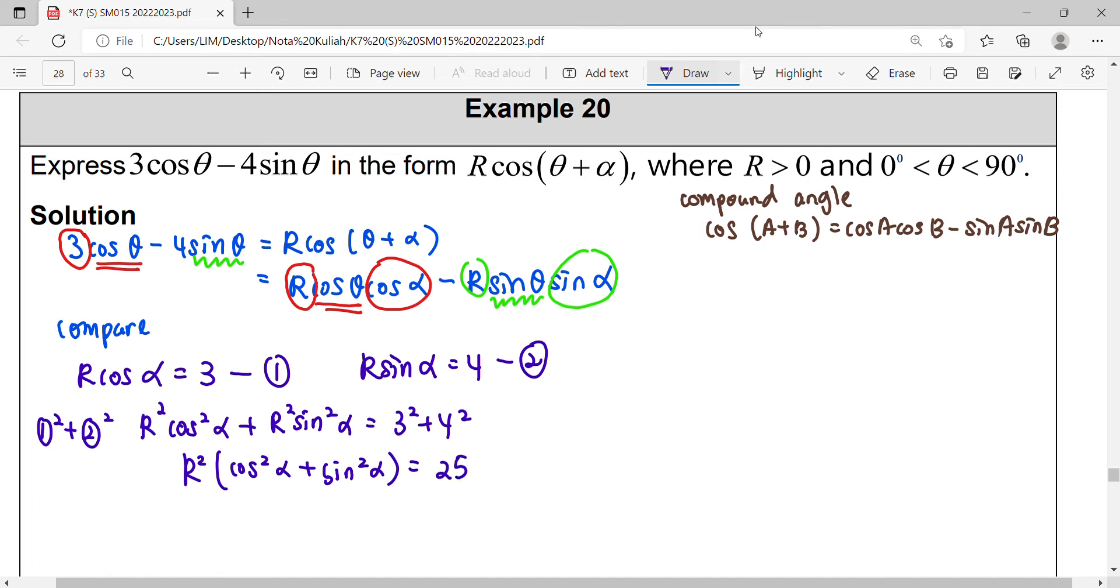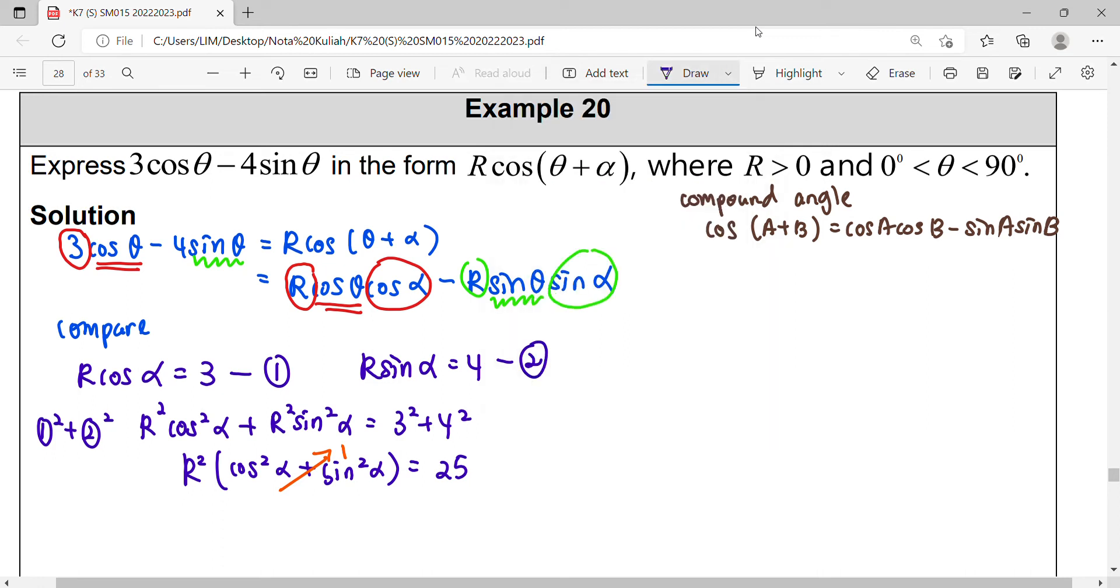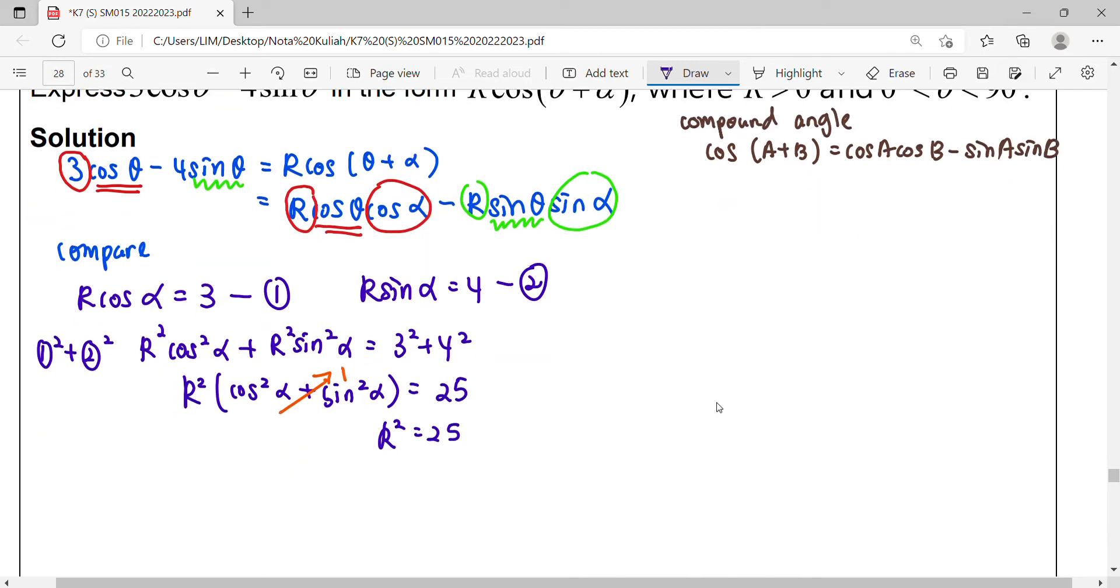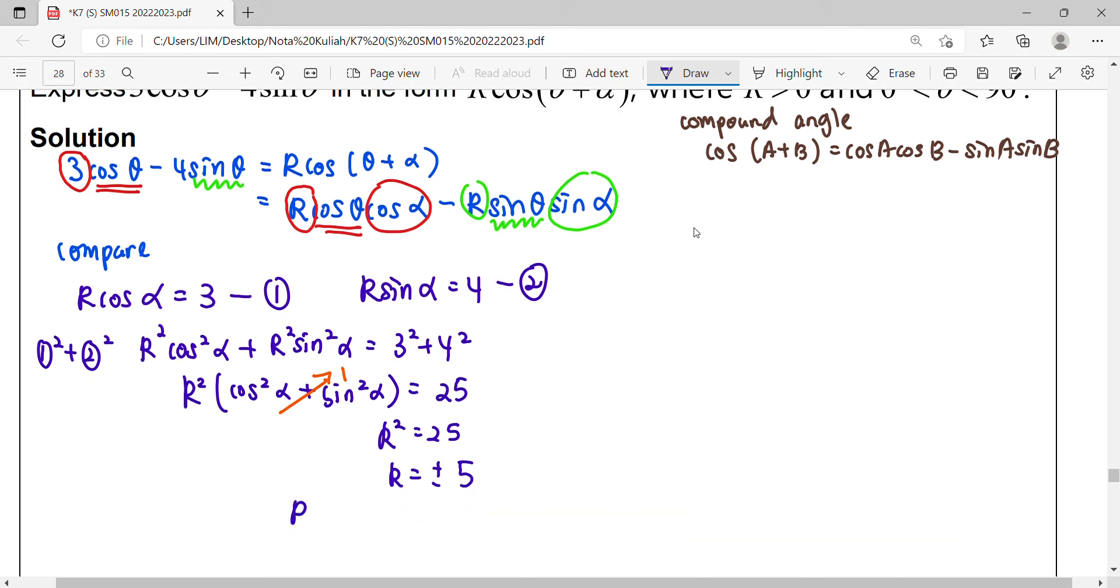This cos²α and sin²α will give you a value of 1, so this is how we can get R. R² equals 25. R will be ±√25, which is 5. You notice that our expression only accepts R greater than 0, so when R greater than 0, the answer is 5.